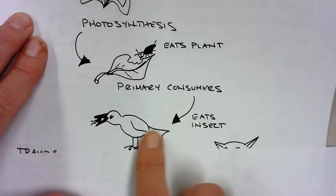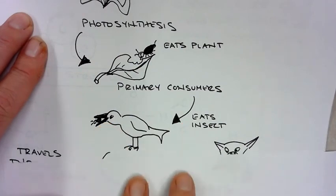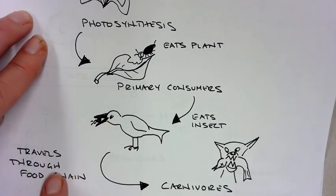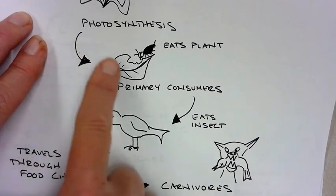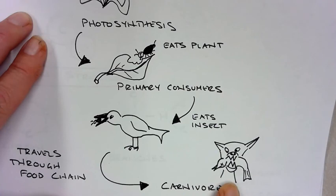That consumer is then eaten by a bird. It travels through the food chain, and that bird is now being eaten by a fox or a carnivore. So originally, carbon dioxide started in the air, goes through the food chain, and ends up in carnivores, including humans.